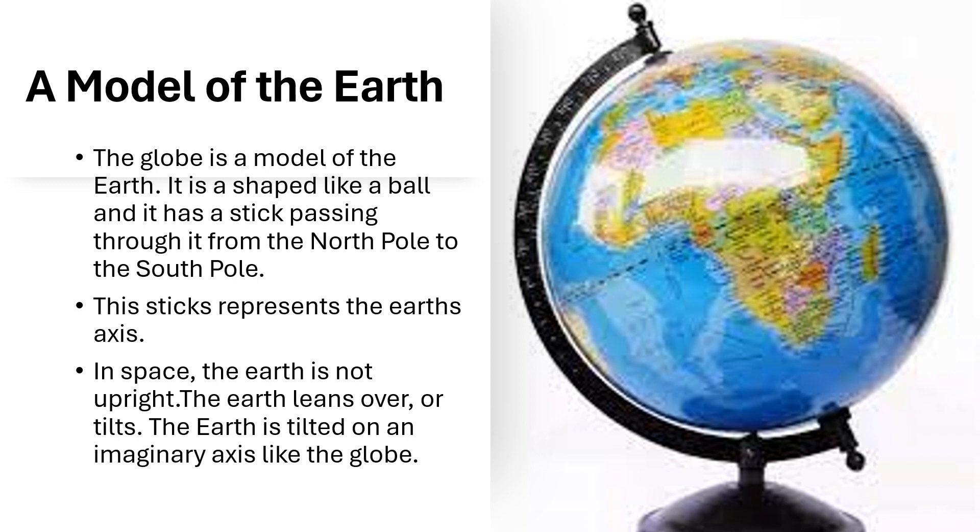A Model of the Earth: The globe is a model of the Earth. It is shaped like a ball and it has a stick passing through it from the North Pole to the South Pole. This stick represents the Earth's axis.